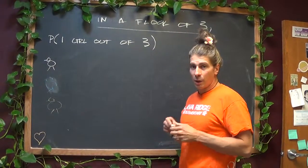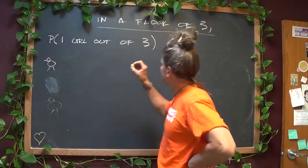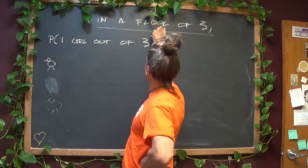Okay, so what I want to do is I want to break this down. I want to break this down by a flock of three.